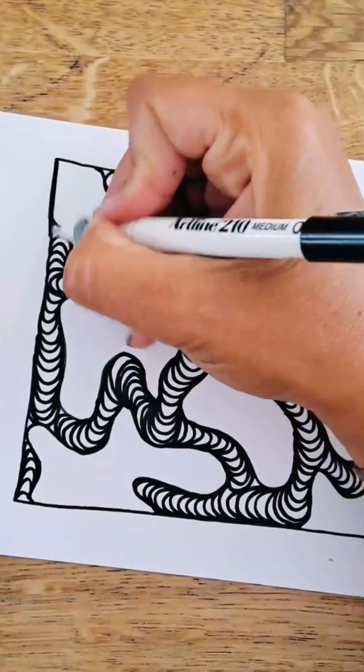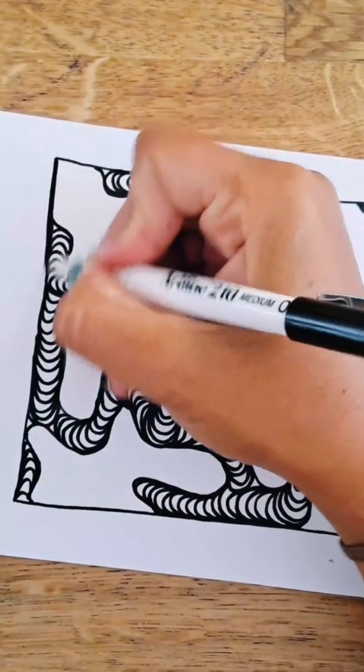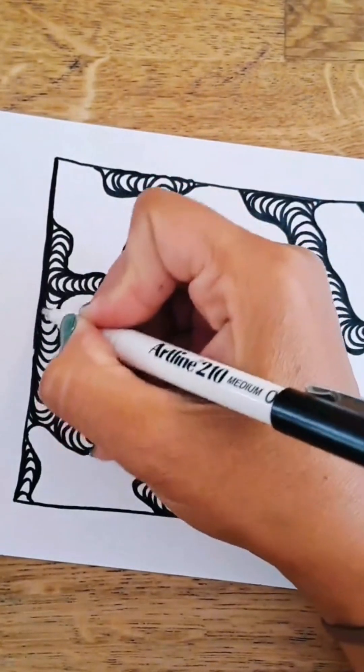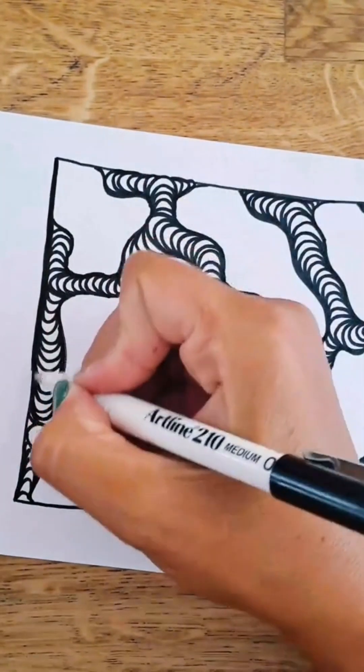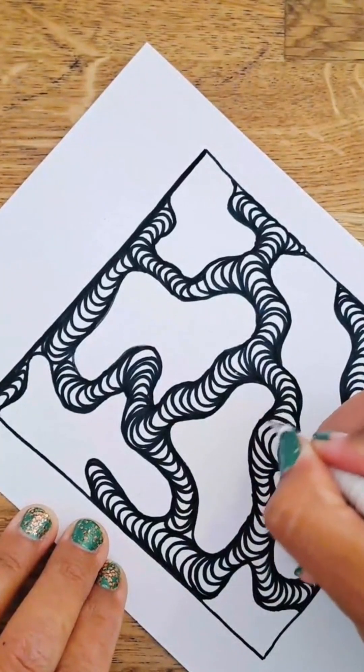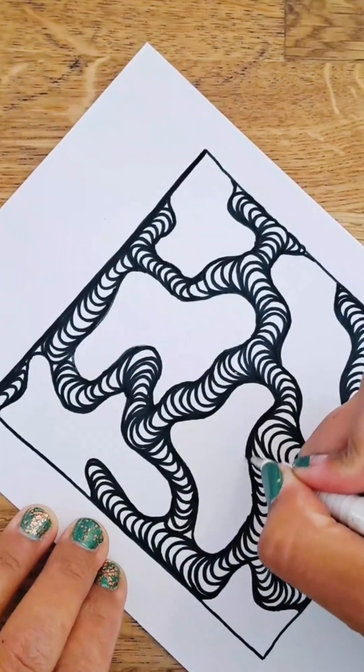The next part here of the process is just basically thickening up all of the lines. So I go over the border, I go over the cloud or the cow print, giraffe print, whatever blob shape you have, and I just really thicken up all of those lines.